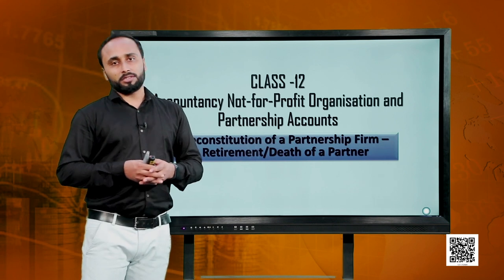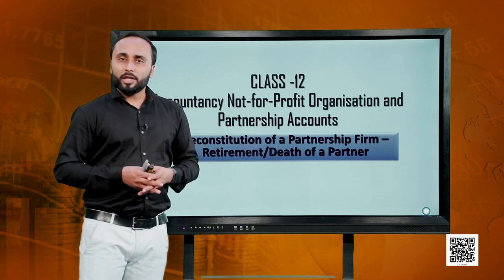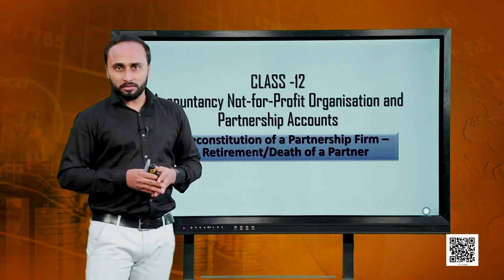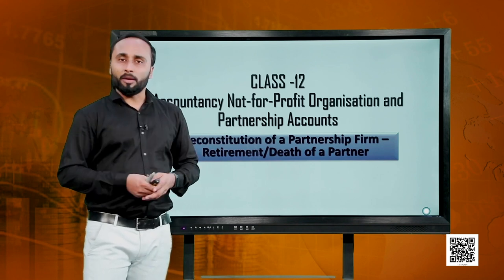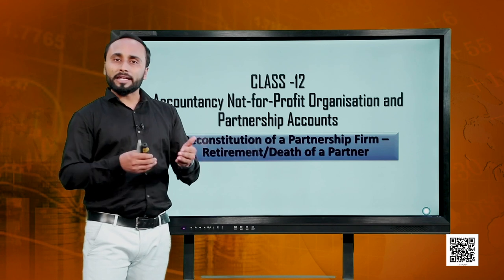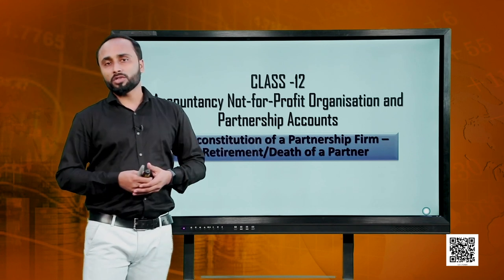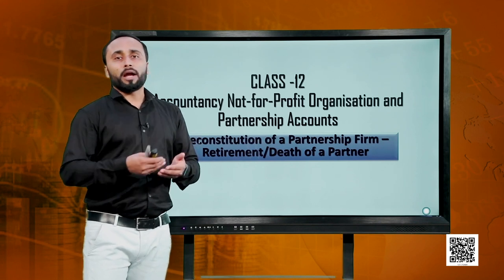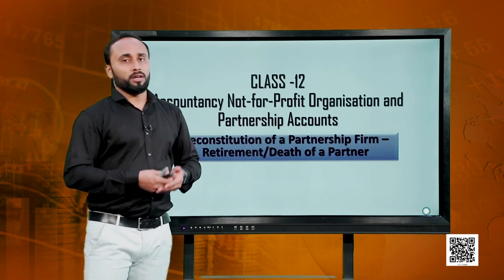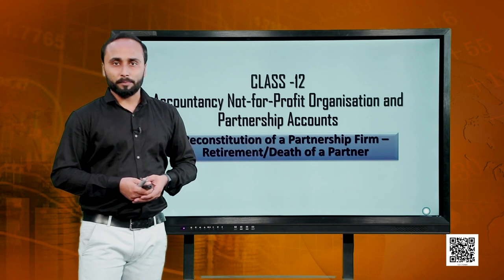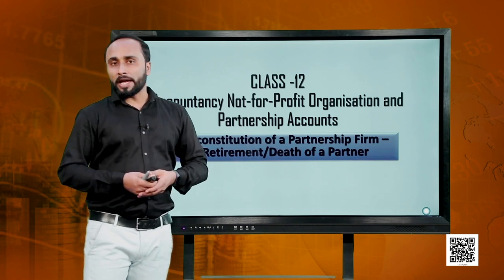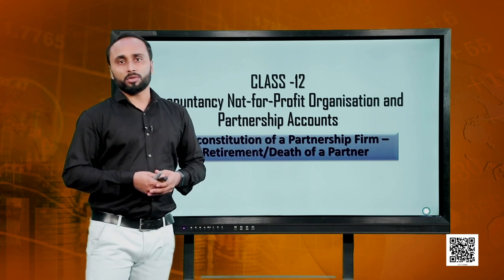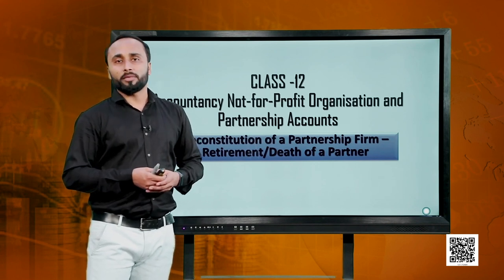In the first part of this chapter, we tried to understand what retirement or death means. We basically focused on retirement and we talked about the things that a partner gets when he or she retires from the firm, and also what the partner has to give back to the firm at the time of retirement. We made a list of things that need treatment in the accounting books of the firm at the time of retirement.